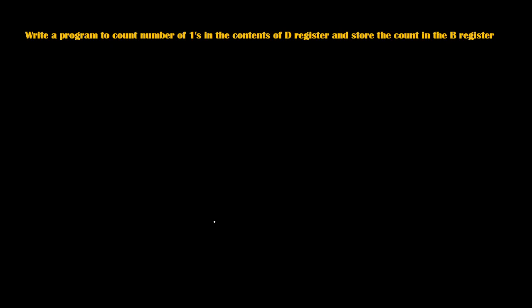Hello friends. Today we are going to learn a program to count the number of ones in the content of the D register and store the count inside the B register. We are going to count how many ones are there inside the D register and store that count inside the B register. Let's say that before execution, the D register is 23H.